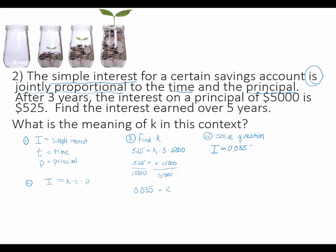Next in my formula is time, and we're given here time as 5 years. And last in my formula is principal, and so find the interest. It doesn't say that principal's changed, so I'll use that same exact number.